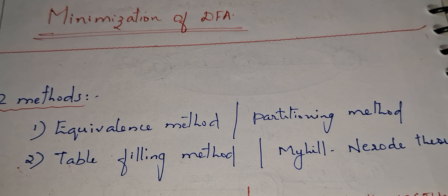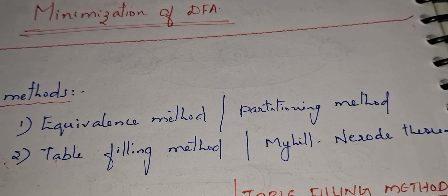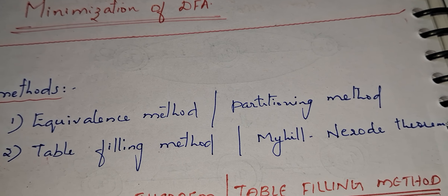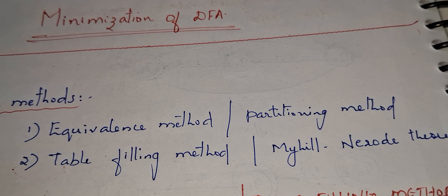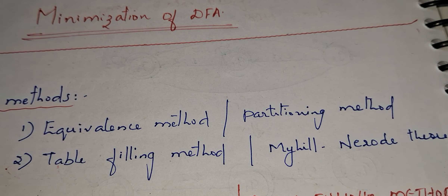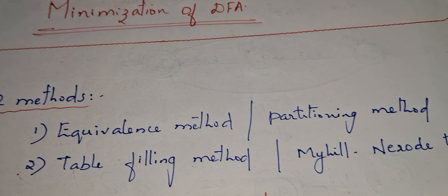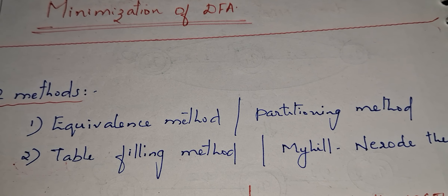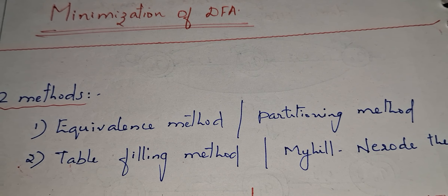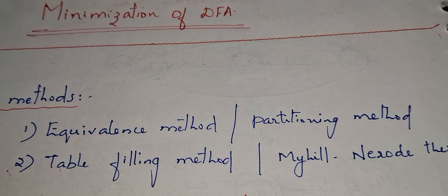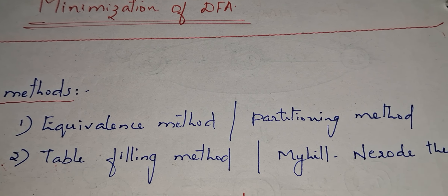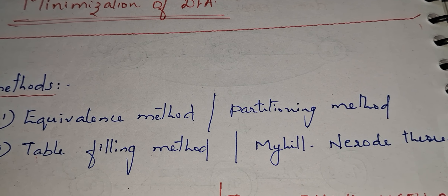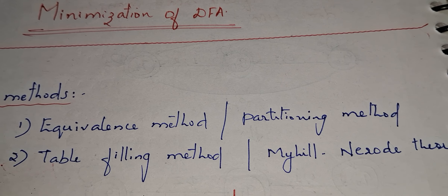Suppose you have a DFA consisting of some states — say six states — and you are trying to reduce the number of states from the given DFA. In order to perform minimization you can use any one of two methods. The first one is the equivalence method or partitioning method. The second method is the table filling method or Myhill-Nerode theorem. In this video I am going to explain the table filling method to perform DFA minimization.